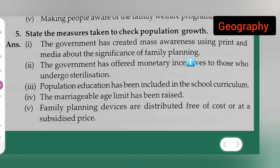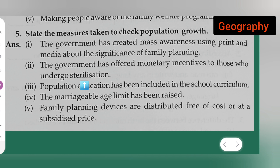The second measure: the government has offered monetary incentives to those who undergo sterilization. The third point: population education has been included in the school curriculum.